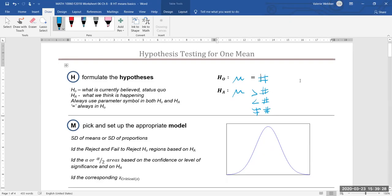Okay now again since we are doing means we're going to have our sampling distribution of means is going to be our model and remember that's our unimodal symmetrical shape.